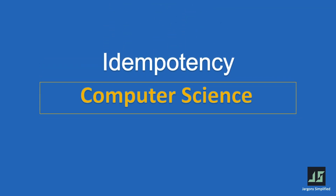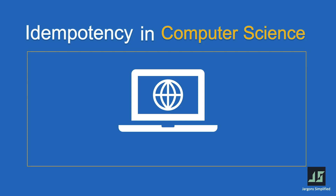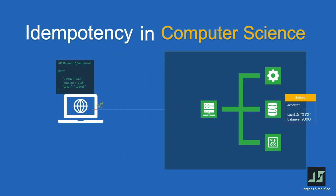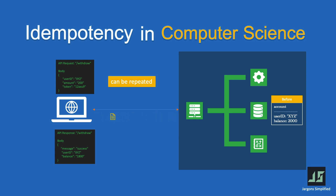In computer science, idempotency plays a crucial role in designing reliable systems and protocols. For example, in web development, an idempotent API endpoint is one that can be called multiple times with the same input parameters, resulting in the same outcome and state. The API request can be repeated and called multiple times and it needs to result in the same outcome.